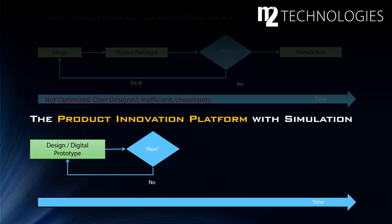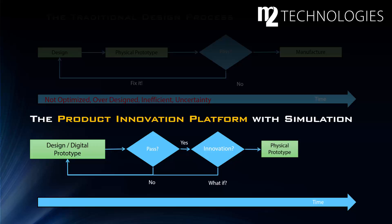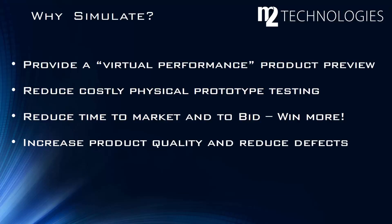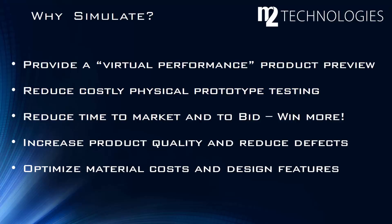Initial concepts may fail to meet requirements, but iterating digitally is far less time-consuming and costly than iterating physically. In fact, simulation is so efficient that the designer can afford to keep iterating even after the design passes — searching for a design that not only works but is of the highest quality and lowest cost. New innovations can take shape and better products result, all before the first physical prototype is constructed. Defects that may lead to unsatisfied customers can be uncovered while corrective action is still relatively inexpensive. Materials and design features can be optimized, and innovation is fostered — there's less risk in exploring a radical design change when you're using a digital prototype. That crazy idea could be your next big innovation.